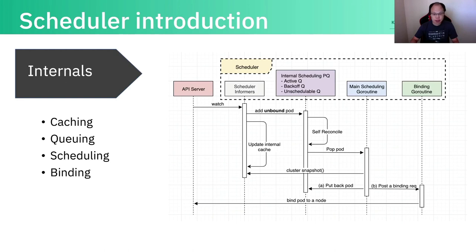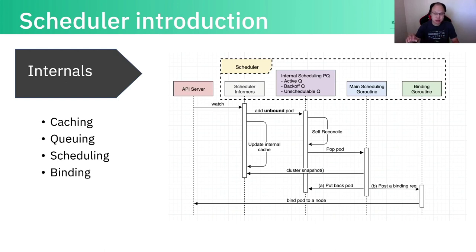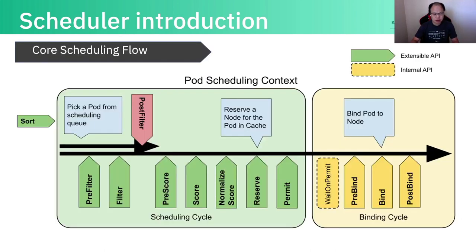The second part is called queuing. So if a pod is coming into the queue, we schedule it with a reasonable order. Internally we have a priority queue. And if there's no node fit for the pod, we also have some back-off mechanism to ensure the lower priority pod has a chance to be scheduled, and the pod can have a fair chance to be re-popped up and retried.